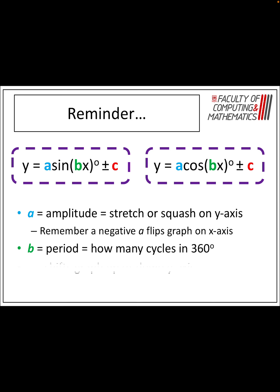So to summarise: A is your amplitude — it stretches or squashes the graph in the y-axis, and a negative will flip it. B is the period — how many cycles there are in 360 degrees. And C shifts the graph up or down the y-axis.